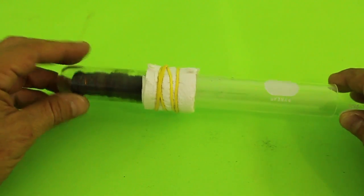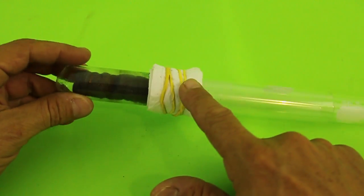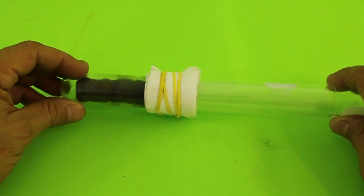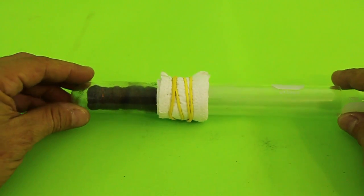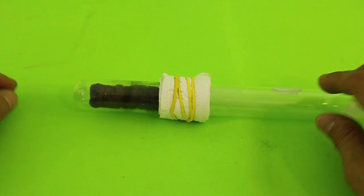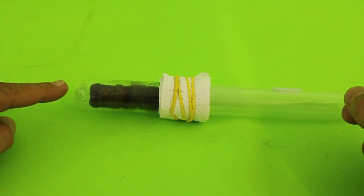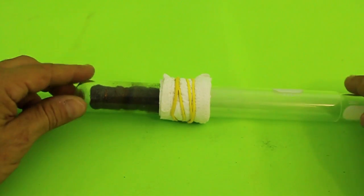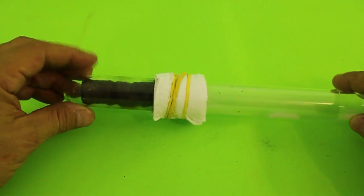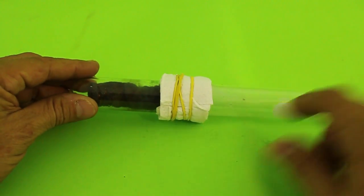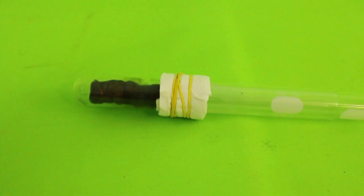Before we start the motor you need to apply water to the paper towel. Stirling engines are more efficient when the difference in temperature between the hot side and the cold side is larger. So that is the reason we need to cool down the cold side.